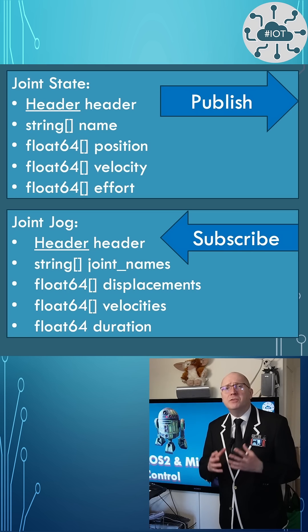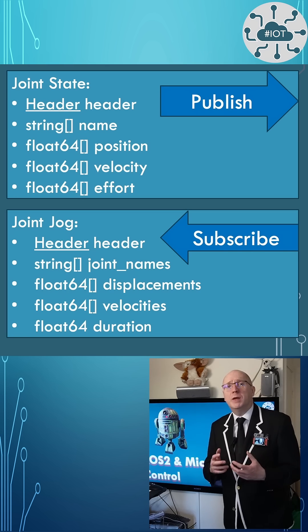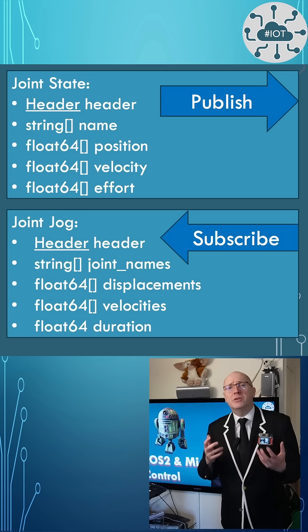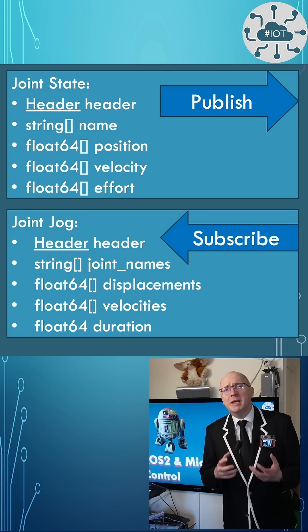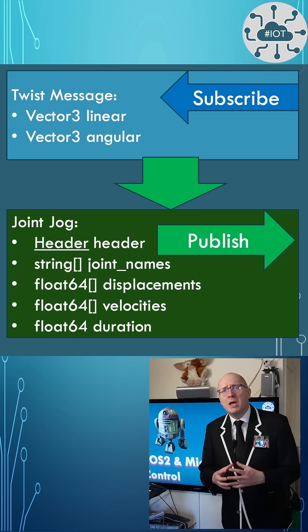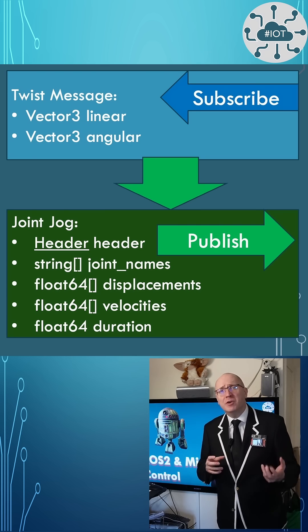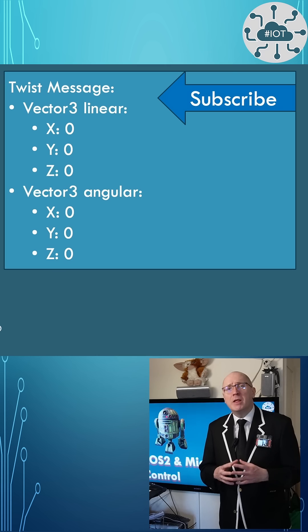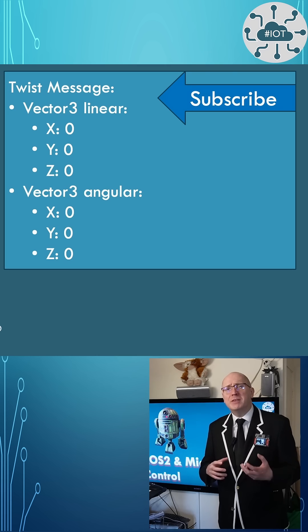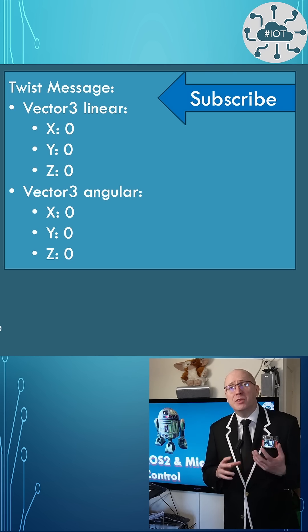To control the wheel I've used the joint job message, taking a request to displace the wheel to a specific angle in radians or to achieve a specific speed in radians per second. To drive and steer we need to interpret the twist message and convert it to a joint job message for each wheel. The twist message provides both linear and angular velocity in three dimensions.